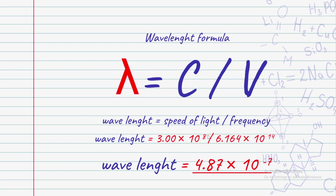Speed of light is 3.00 times 10 raised to 8. Don't forget that. Wavelength equals speed of light over frequency. So that is 3.00 times 10 raised to 8, divided by 6.164 times 10 raised to 14. The wavelength result is obtained.